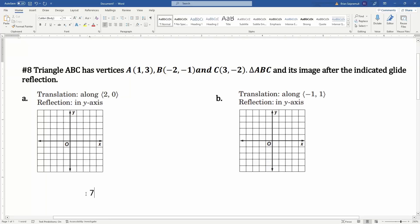This is section 9 number 8. Triangle ABC has the following vertices, and we need to find its image after this glide reflection. The glide reflection is a composite transformation that has a translation followed by a reflection.